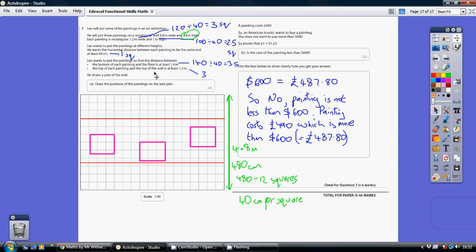Equally, they've got to be more than 1.2 metres away from the top of the wall. Now 1.2 metres is 120 centimetres divided by 40 is 3 squares. So we know again, the paintings have got to be below that red line.